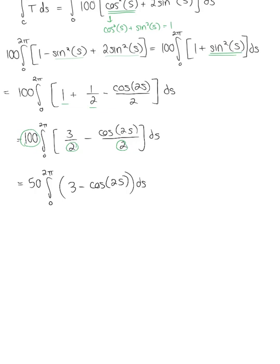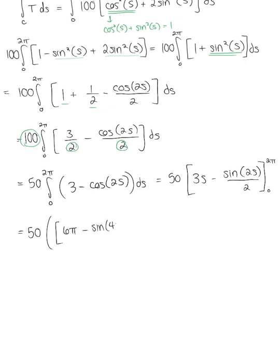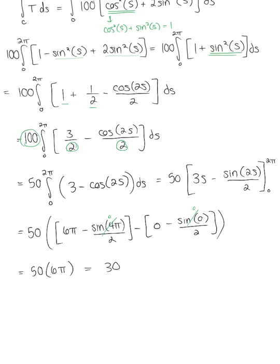Integrating, we get 50 multiplied by 3s minus sine of 2s divided by 2, evaluated from 0 to 2π. Evaluating this gives 50 multiplied by 6π minus sine of 4π over 2 minus 0 minus sine of 0 over 2. Since sine of 4π and sine of 0 both equal 0, we're left with 50 multiplied by 6π, which equals 300π.